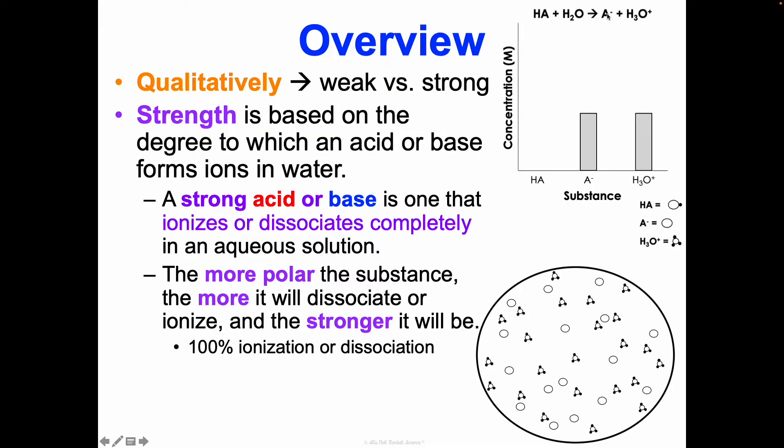We get that anion here with the negative charge, and then the water takes in the hydrogen, and we get our hydronium ion with a plus one charge. A strong acid would be incredibly polar, so much so that it fully ionizes into its two parts. Nothing is left over from a strong acid at the end. It's completely dissociated into the anion and our hydronium ion.